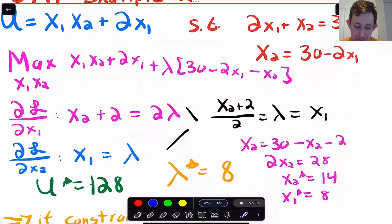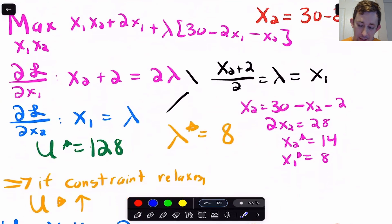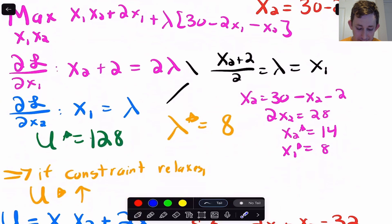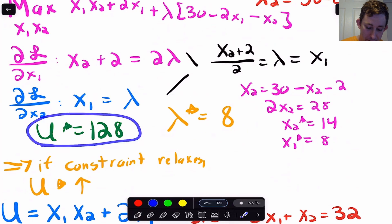If I just start going through the math, here's my Lagrangian. Again, if you're a little confused how to set that up, see the previous video or part one of this series. Here are my two first order conditions. I'm going to solve for x1 star as a function of x2 star, I'm going to plug that into my constraint. Then what I'm going to get is I'm going to get that x1 star is equal to eight, x2 star is equal to 14. The second first order condition says that x1 star is equal to lambda star. So lambda star must be equal to eight.